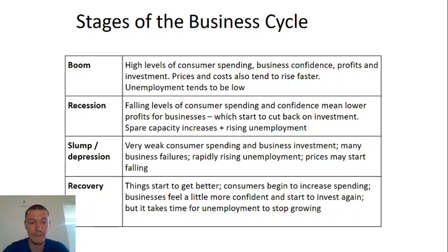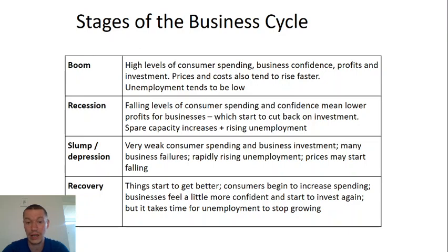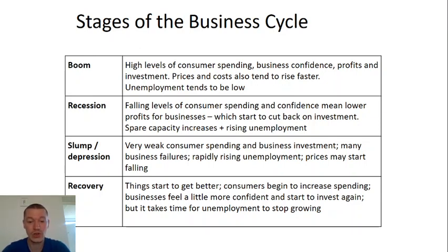Once we've gone beyond the recession stage, we're at the slump or the depression — it's the worst part of recession. So we've got very weak consumer spending, no business investment. Businesses start to shut down, and that's probably what we're seeing at the moment. Unemployment is rising rapidly. Prices will have to start dropping because firms need people to spend money in some way — hence things like eat out to help out. And because of these prices dropping in the cycle, we start to hear a bit of a recovery. Things start to get better — the green shoots of growth, so to speak. Consumers begin to increase their spending, firms feel a little bit more confident and start to invest again. But it takes time for unemployment to stop growing and for employment to start to increase. Then when we get to the recovery stage, we hit the boom stage again — people are flush, prices go up, the economy booms, and then we hit the recession again.